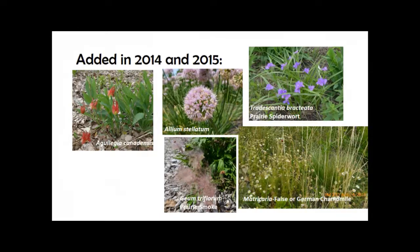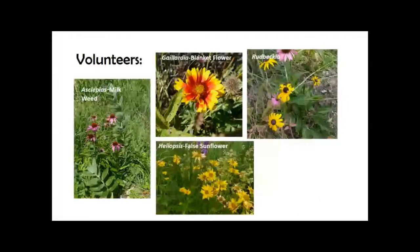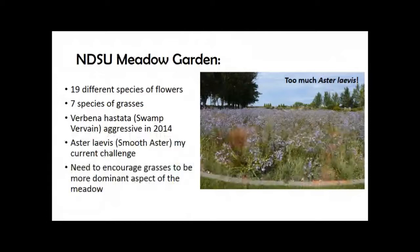In 2014 and 2015, more plants were added: Allium stellatum (prairie onion) divided from a specimen plant, Aquilegia, prairie smoke, prairie spiderwort, and Matricaria — which is a noxious weed in some counties and disappeared by 2016. Volunteer plants showing up spontaneously included milkweed, Gaillardia, false sunflower, and some Rudbeckias — kept because of their value to monarchs and pollinators. By 2016 the garden had 19 flower species and 7 grass species.